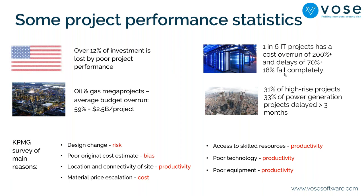Oil and gas mega-projects average a budget overrun of 59%. KPMG did a survey looking at the main reasons for project failure — the ability to meet the deadline, stay within budget, and deliver the product. Seven key factors emerged, including design change, which is a risk event, and poor original cost estimates.